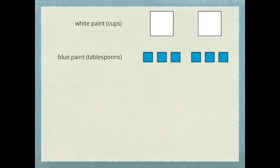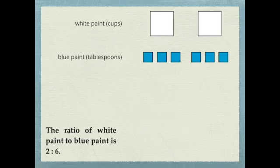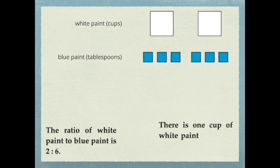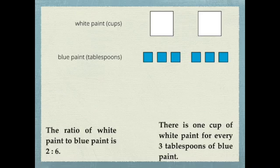So listen to these sentences on how I describe the ratio I'm trying to create. The ratio of white paint to blue paint is two to six. But that's not as descriptive as I want because we're talking about cups and tablespoons, so it's not quite the same. There is one cup of white paint for every three tablespoons of blue paint. Okay, that's a little more descriptive. That's pretty good. Listen to this one.